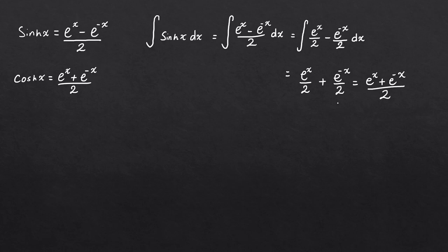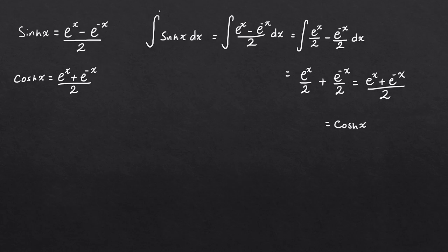Looking back at our exponential definitions, we can see that e to the x plus e to the minus x over 2 is exactly cosh x. So if you integrate sinh x with respect to x, you get cosh x, and because we have no limits on our integral, don't forget the constant of integration, plus c.